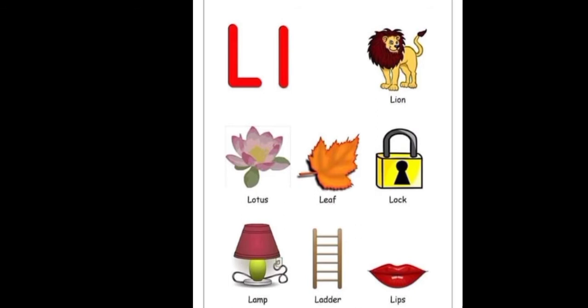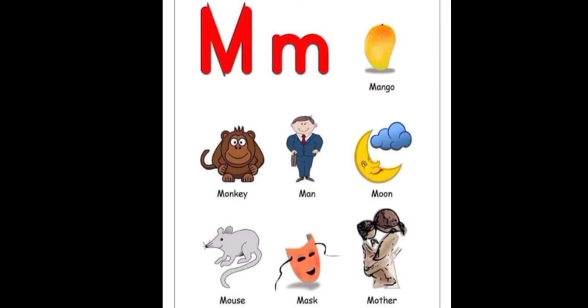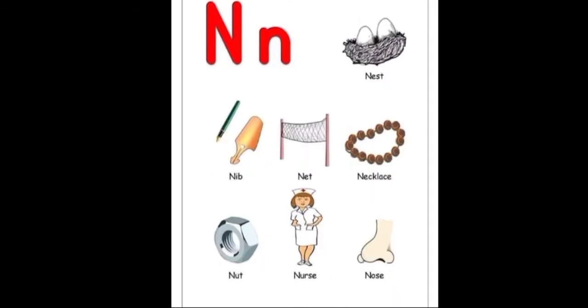L: leaf, lock, lamp, ladder, lips. M: mango, monkey, man, moon, mouse, mask, mother. N: nest, nib, neck, necklace, nut, nurse, nose.